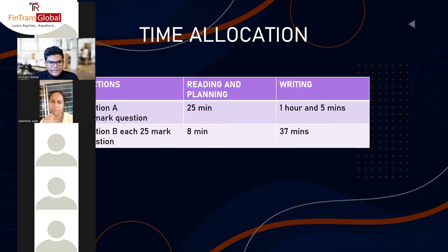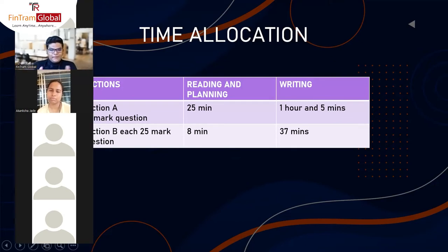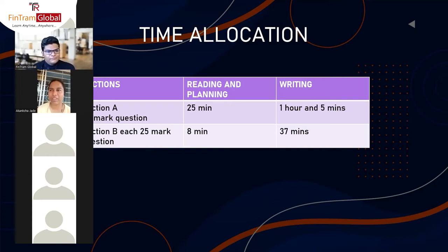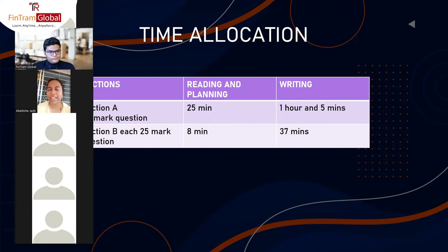Moving on to time allocation. When you were attempting your previous exams, did you face any issue with time? Yes, I've faced it every time — paper completion is always a challenge for me, but I've improved. For SBL, I attempted 80 marks this time versus 50 marks last time. With practice, you should be able to improve. Is the audit paper very lengthy? Not as lengthy as SBL, I can tell you that.